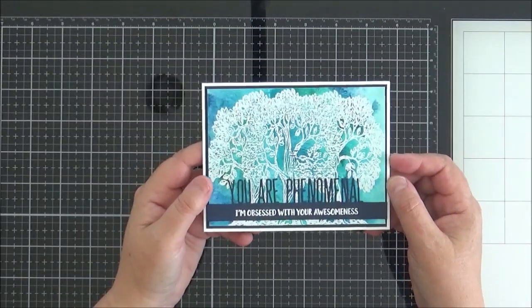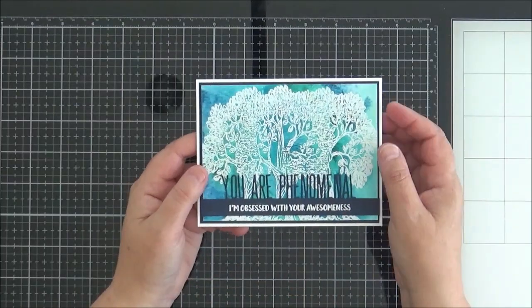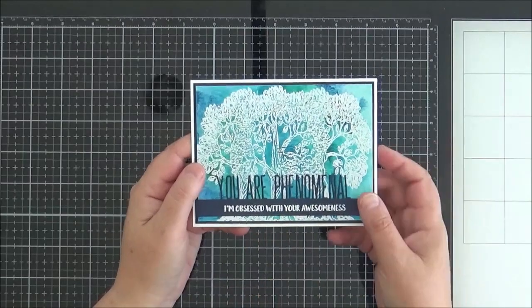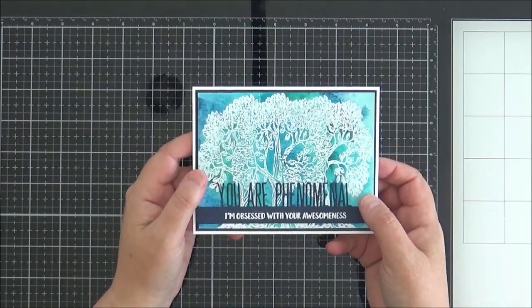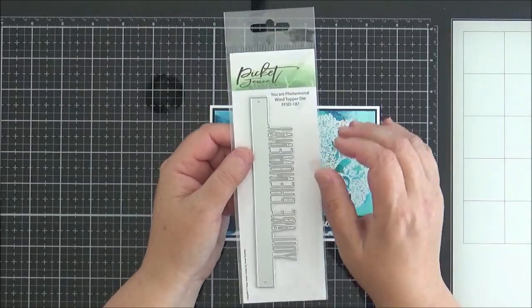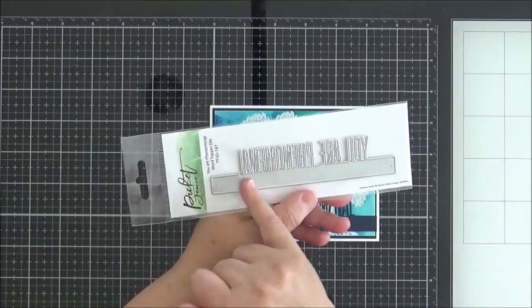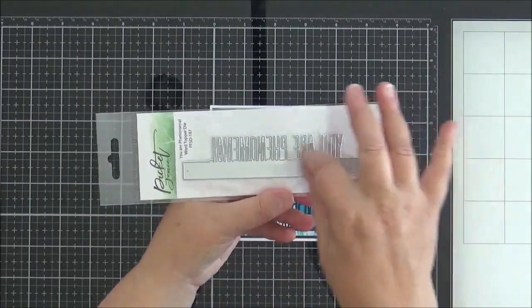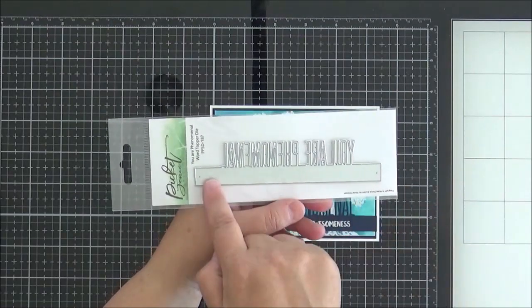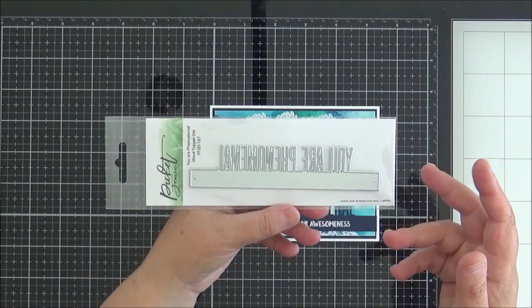Here is my card with that tree set. So as I mentioned, I did some white embossing over a watercolored background. And then I took one of the new word topper dies. So I'm just going to show you that now. This one here, and there are five of them this month, this is called You Are Phenomenal. And as you can see here, you've got the words that go along the top of this strip. So what that allows you to do is just stamp another greeting underneath. So it's really easy to obviously line that up. You don't have to cut it all out separately.